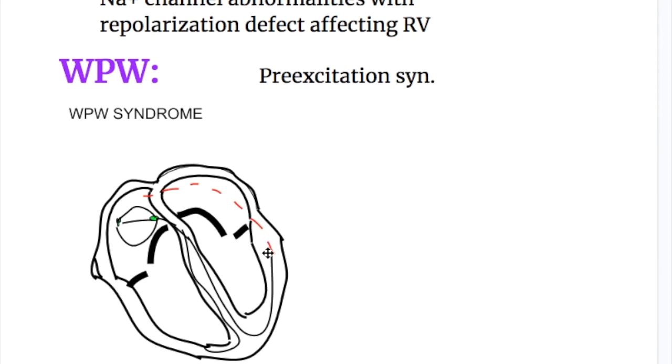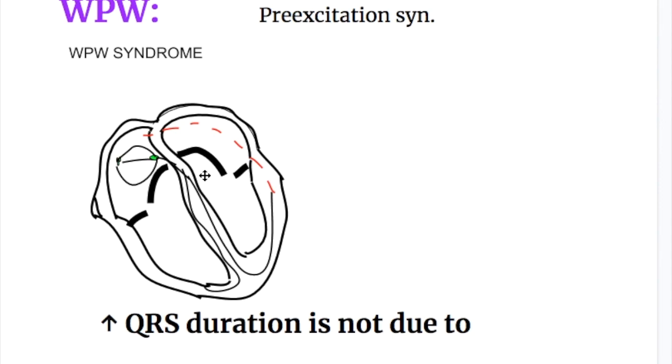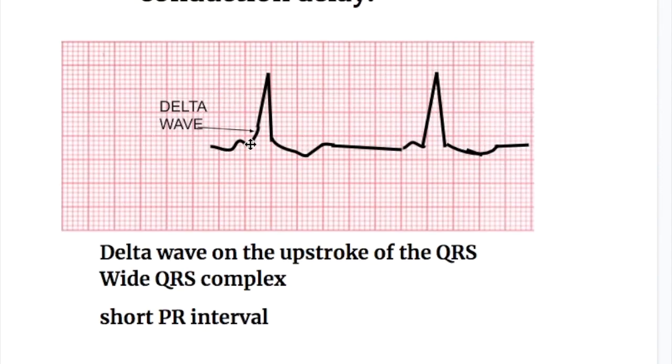That causes short PR interval and an increase in QRS complex duration. In EKG, there is slurring at the initial portion or the ascending part of the R complex. That is known as delta complex. There is short PR interval, and number three, QRS is prolonged or wide QRS.